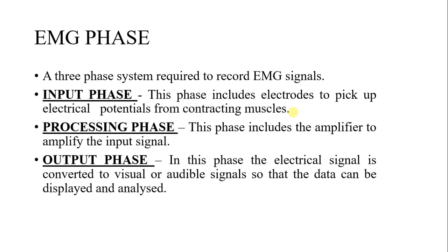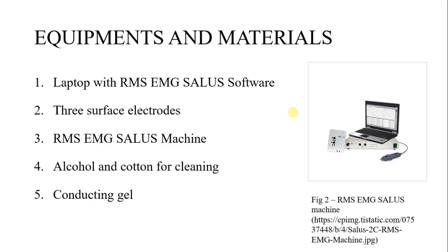In the output phase, the electrical signal is converted to a visual or audible signal so that the data can be displayed and analyzed. For the equipment and materials, we need a laptop with the RMS EMG Cellar software installed, three surface electrodes, an RMS EMG Cellar machine for recording, alcohol and cotton for cleaning purposes, and conducting gel for conduction.